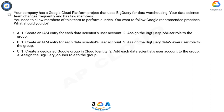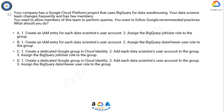Option C: 1. Create a dedicated Google group in Cloud Identity. 2. Add each data scientist's user account to the group. 3. Assign the BigQuery job user role to the group. Option D: 1. Create a dedicated Google group in Cloud Identity. 2. Add each data scientist's user account to the group. 3. Assign the BigQuery data viewer role to the group.